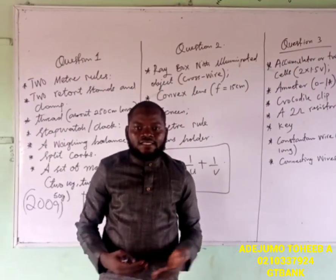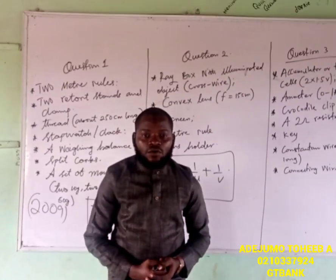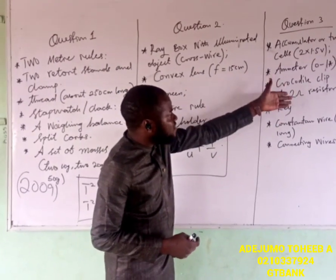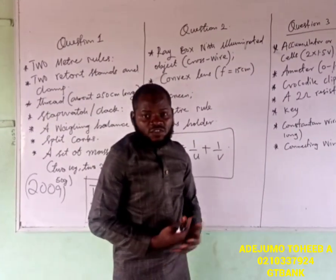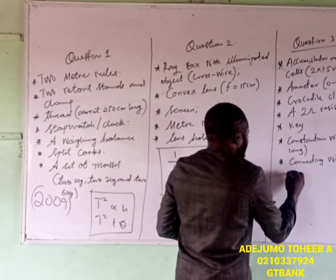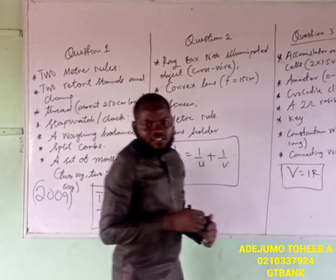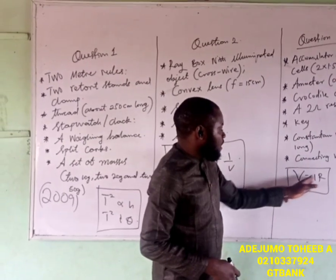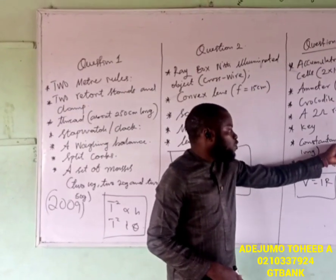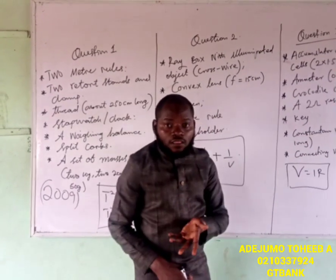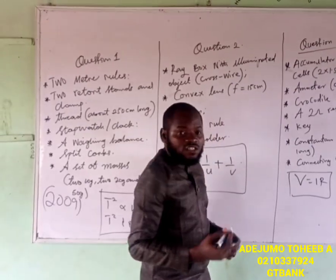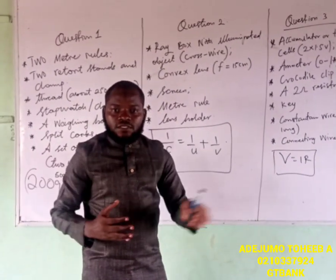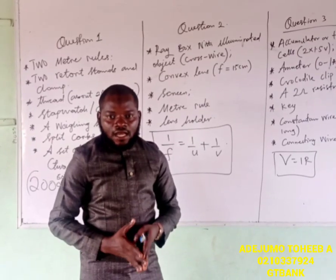For you to look at this experiment and understand what they actually want to test, you can easily predict it — it's also talking about Ohm's law. We have V equals IR. On this law, they are able to guide our results. From this particular point of view, they want to know the resistance of this particular wire, and what is the relationship between length and resistance. That is: if you increase the length, what will happen to the resistance? Will it increase or decrease?